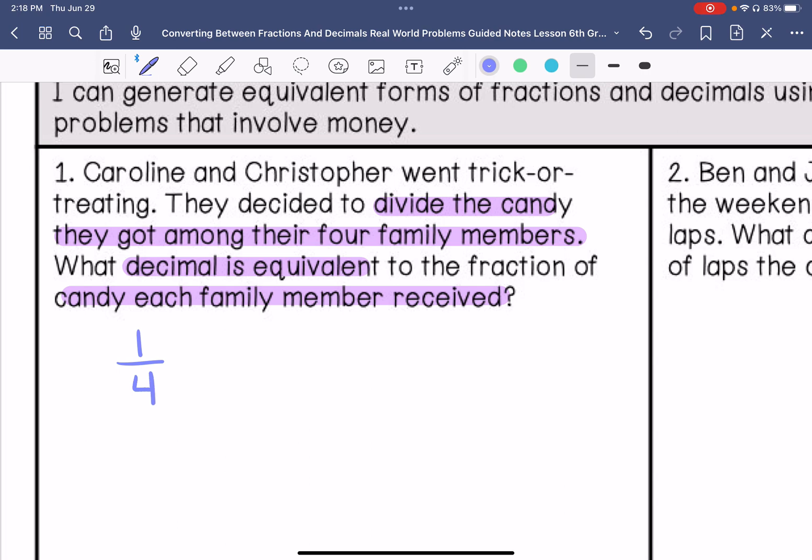We are going to change that to a decimal, so we're going to do one divided by four. One goes into ten twice. One goes into twenty five times. So that is 0.25.